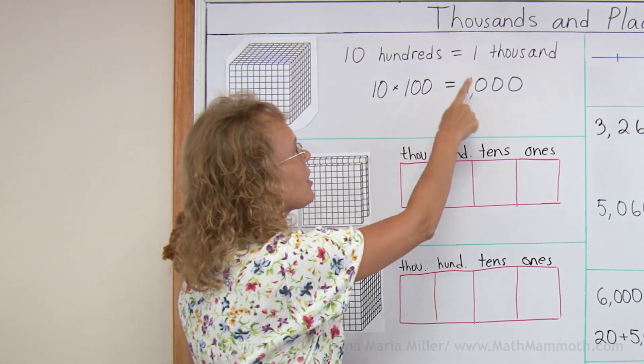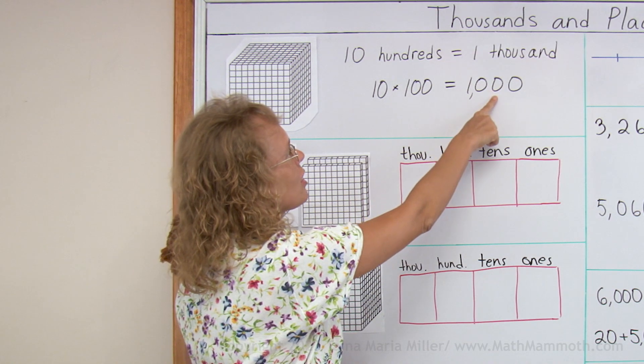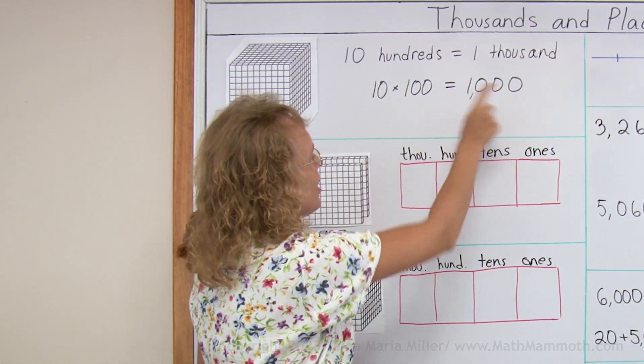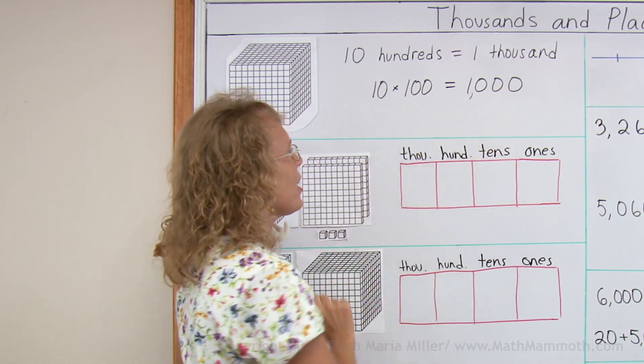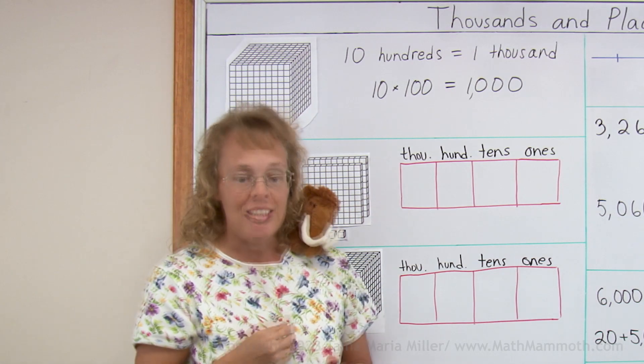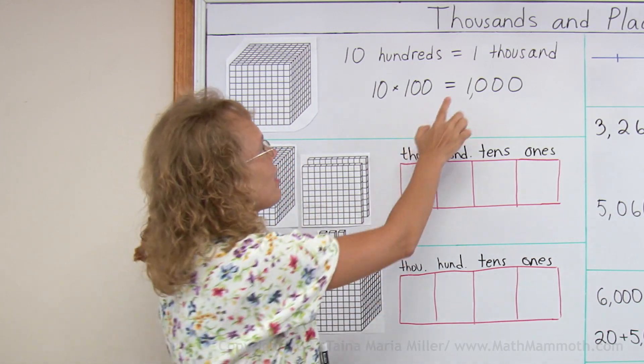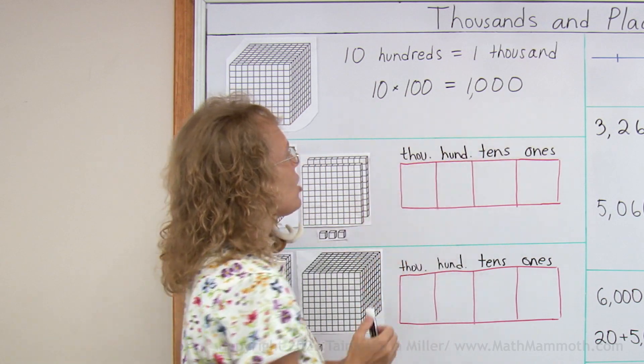This one is for the thousands, this one is for the hundreds, this for the tens, this for the ones. Notice there's a comma there and we write that just for easier reading, to separate the thousands from the other digits.